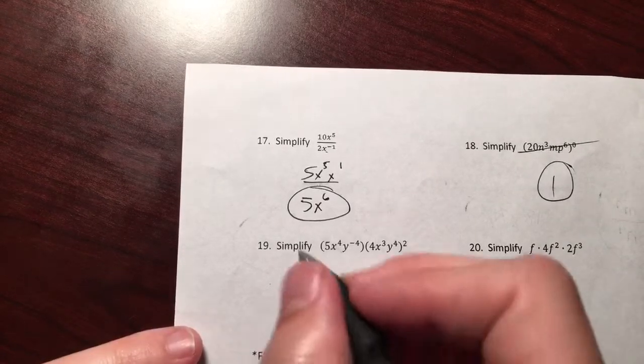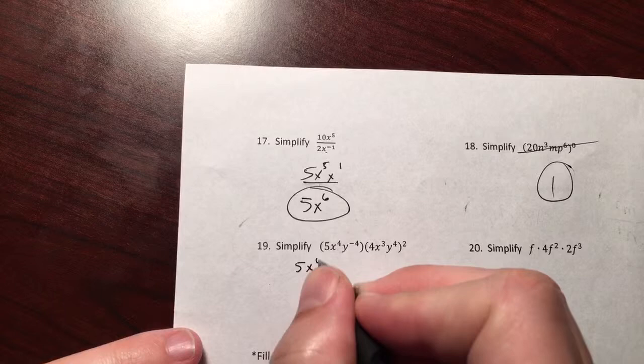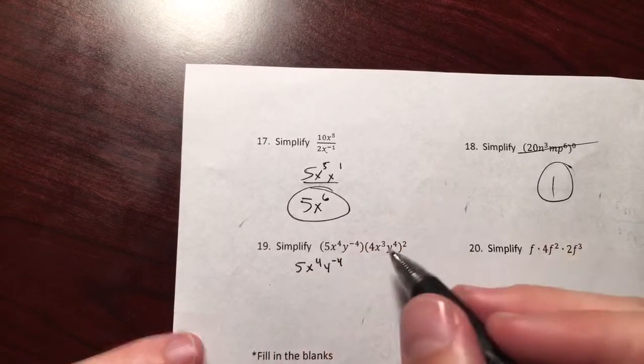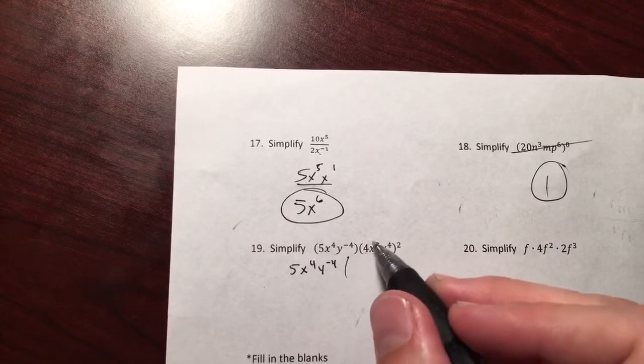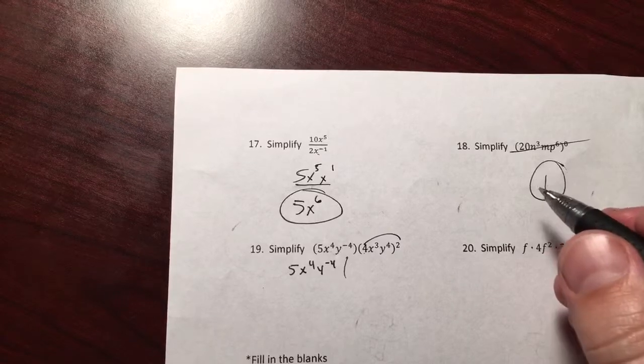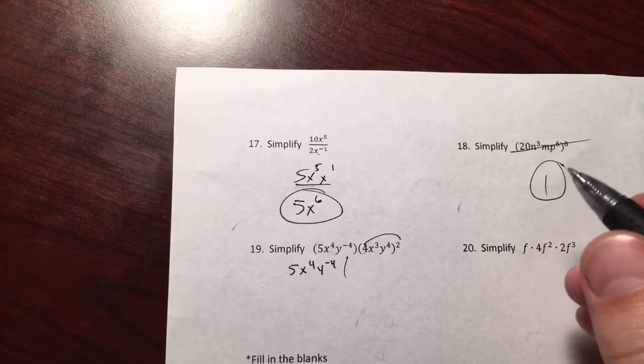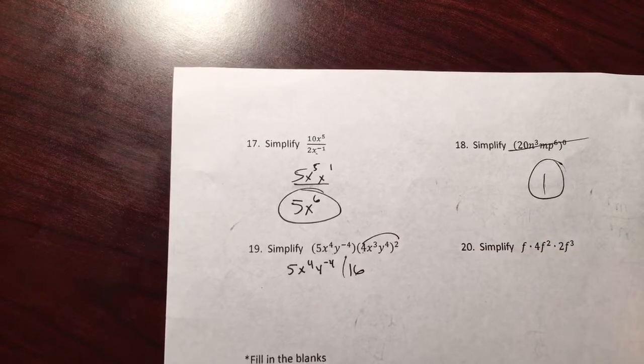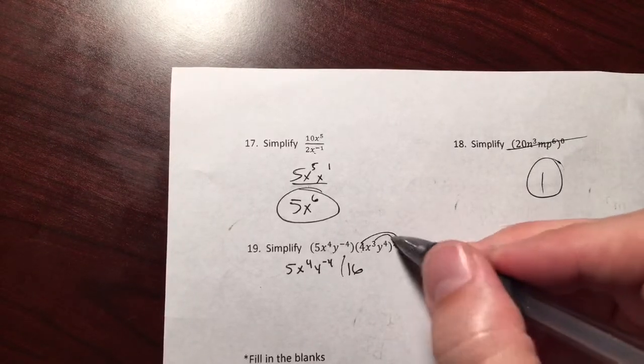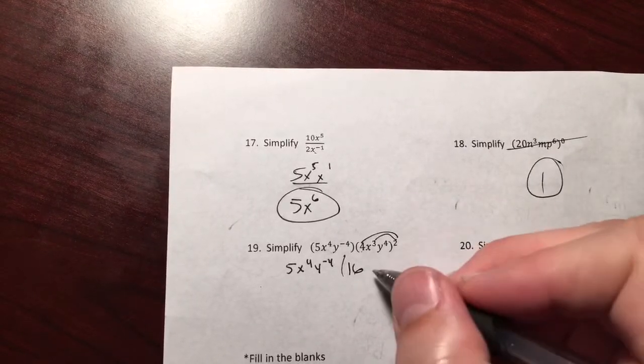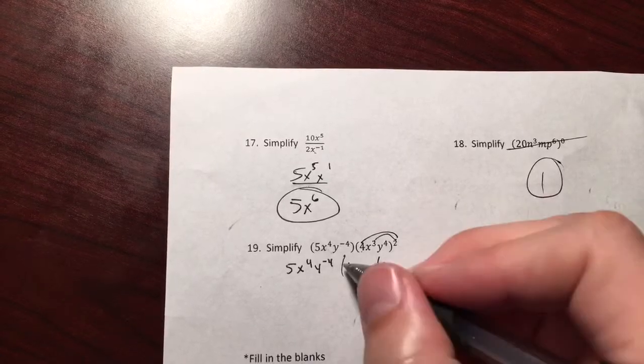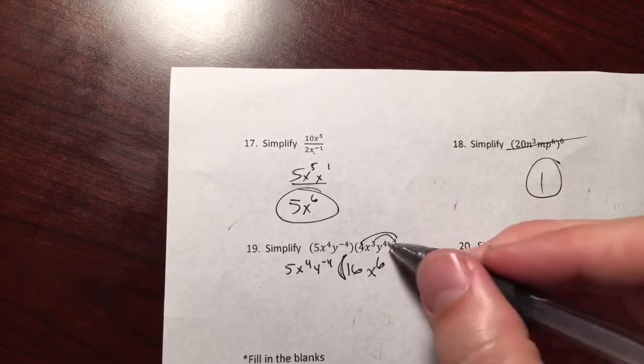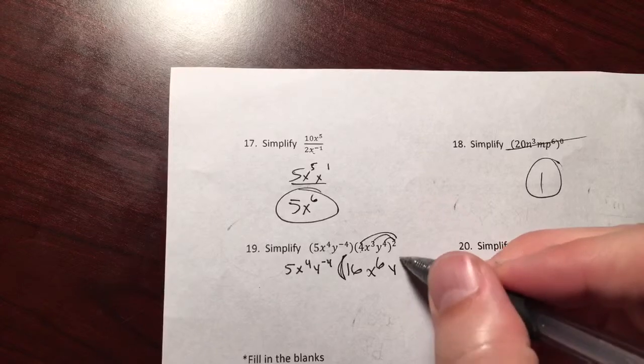The first one is not messed with yet: 5x to the fourth y to the negative fourth. Over here, remember coefficients get raised to the outside power. 4 squared, not 4 times 2. 4 squared is 16. Then you multiply the exponents: 3 times 2 makes x to the sixth—that's in parentheses—4 times 2 makes y to the eighth.